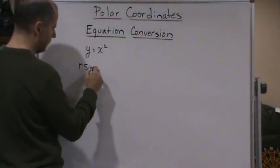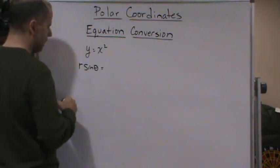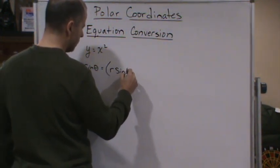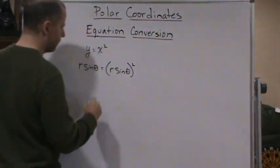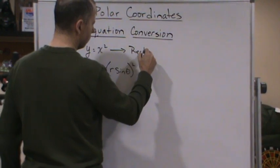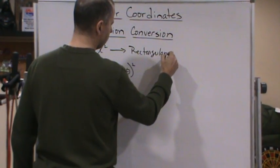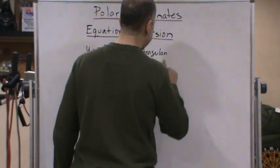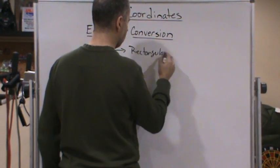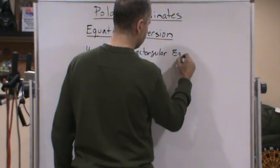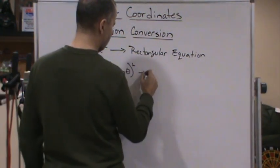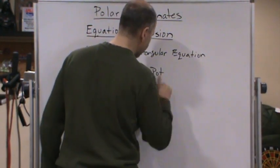So this is going to be r sine theta equals r sine theta quantity squared. And so this is a rectangular equation, and now this is a polar equation.